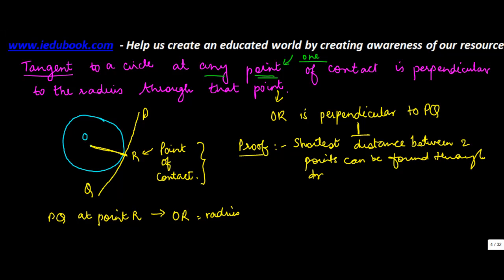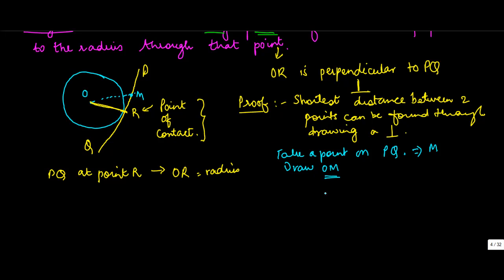Now let us take any point on this line PQ. Take a point on PQ, let's call this point as M, right? Then you draw OM. Now if you see, OM is greater than OR. Why?